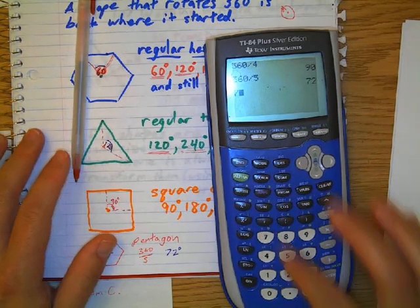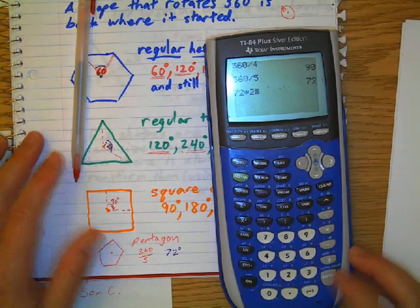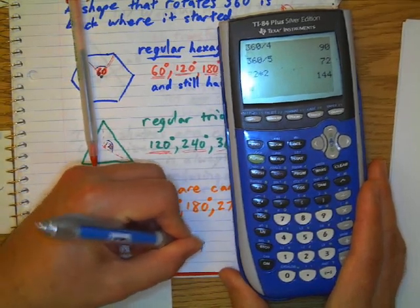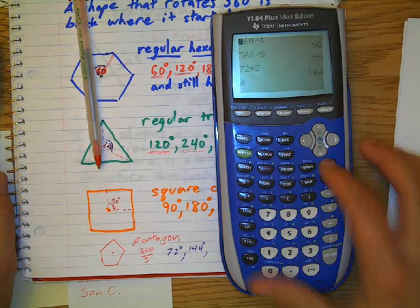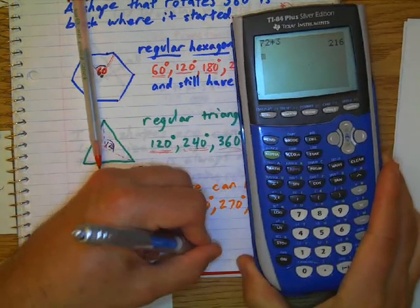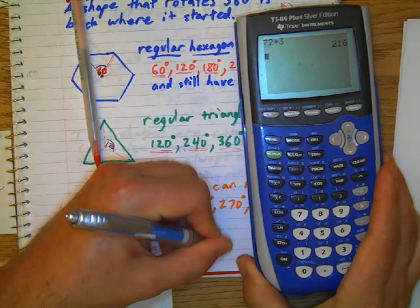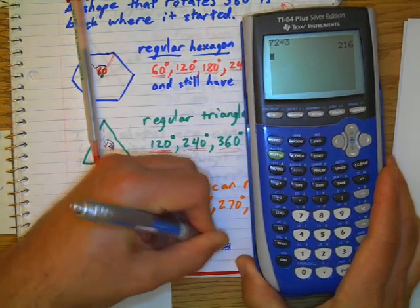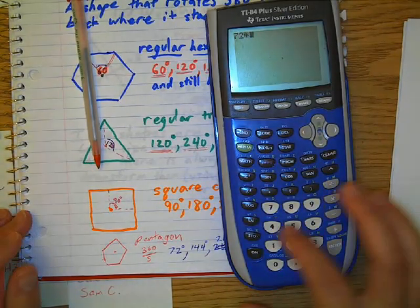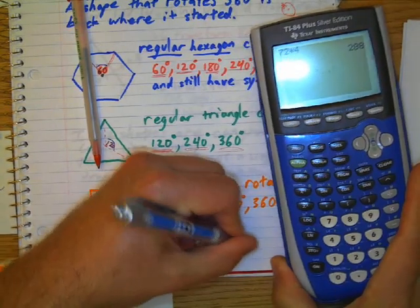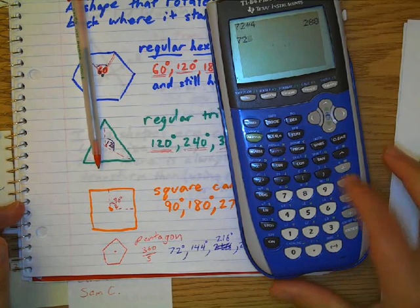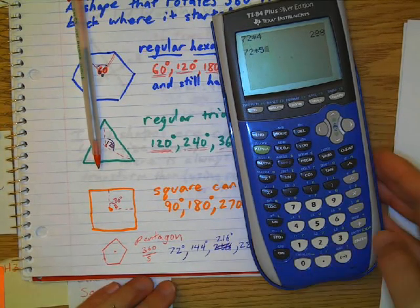Now, what's 72 times 2? I could also rotate it 144 degrees. What's 72 times 3? I could rotate it to 216 degrees. What's 72 times 4? 288 degrees. And 72 times 5, if that you can make a guess, is 360.